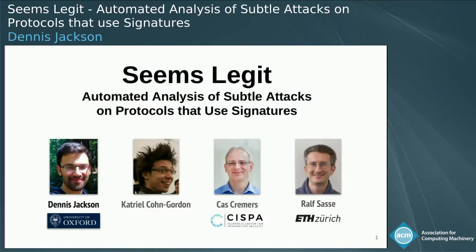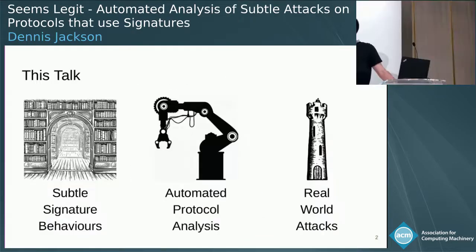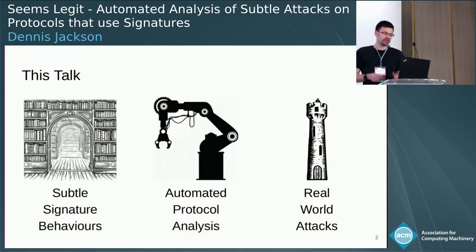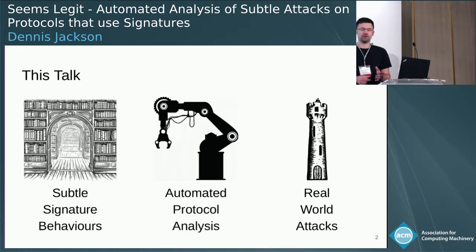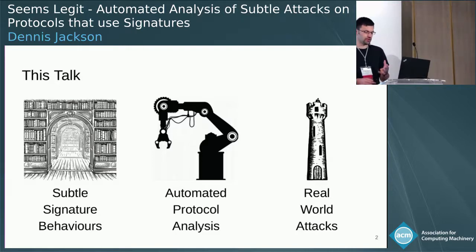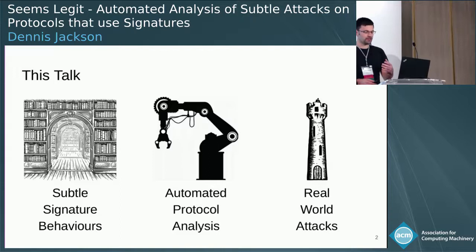This talk, we're going to be looking at some of the subtle behaviours of digital signatures, and we're going to see how they've got some behaviours that you might not expect from their security definition. We're going to then move on to automated protocol analysis and look at how we can model those behaviours in tools that can automatically analyse protocols - protocols rather than primitives. And finally, we're going to look at how to use that new improved tooling to examine real-world protocols that have been deployed, that are running on code somewhere, and that actually have attacks from these subtle behaviours.